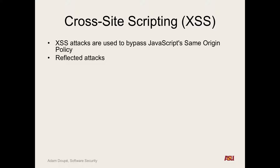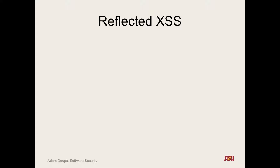We can think about cross-site scripting in three different categories. But first, I want to show you what a cross-site scripting vulnerability actually looks like — how an attacker can bypass the same-origin policy. One way would be to trick the browser, like if there's a bug in the browser. Mainly, we talk about cross-site scripting in terms of bugs in the web application itself. Let's look at a simple example.